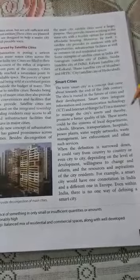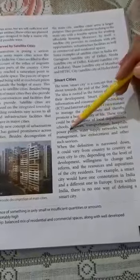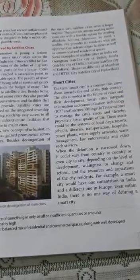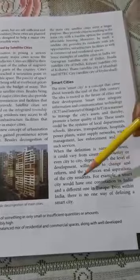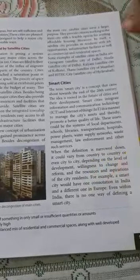These assets could be the systems of local departments, schools, libraries, transportation, hospitals, power plants, water supply networks, waste management, law enforcement, and other such services. When the definition is narrowed down, it could vary from country to country or even city to city, depending on the level of development, willingness to change and reform, and the resources and aspirations of the city residents. For example, a smart city would have one connotation in India and a different one in Europe. Even within India, there is no one way of defining a smart city.